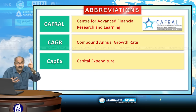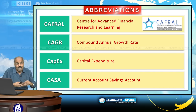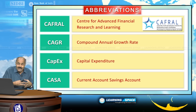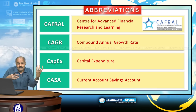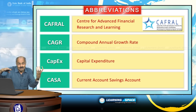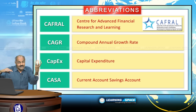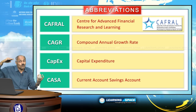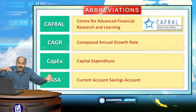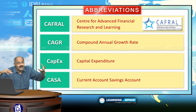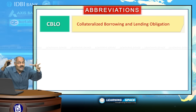Capital expenditure is basically for creation of assets. CASA stands for Current Account Savings Account. This CASA ratio is basically important from a banking perspective because the CASA percentage determines the cost of funds for the banking system. When the CASA percentage is more, the cost of funds will be less. When CASA is less, the cost of funds will be more, because the interest rate on CASA deposits is very low — no interest on current accounts, and around 4% on savings accounts.